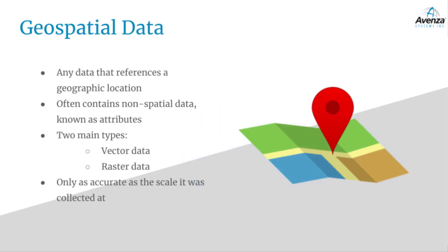The first thing we'll be covering is geospatial data. In the most basic sense, geospatial data is any data which references a geographic location. It often contains non-spatial data as well, known as attributes. There are two main types of geospatial data: vector data and raster data. One important thing to note about geospatial data is that it is only as accurate as the scale it was collected at.